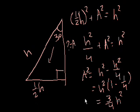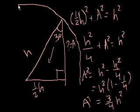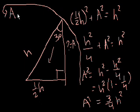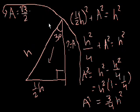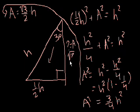So A² equals three-fourths h squared. Taking the square root of both sides, A equals the square root of 3/4 times h, which is the same as the square root of 3 over 2 times h. The square root of h² is just h, so the side opposite the 60-degree angle equals (√3/2) × h.